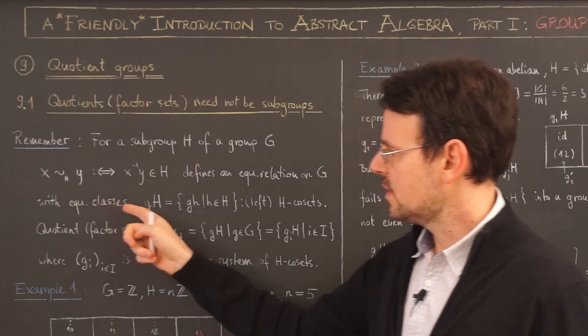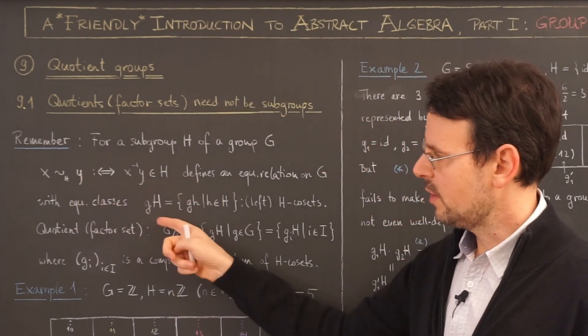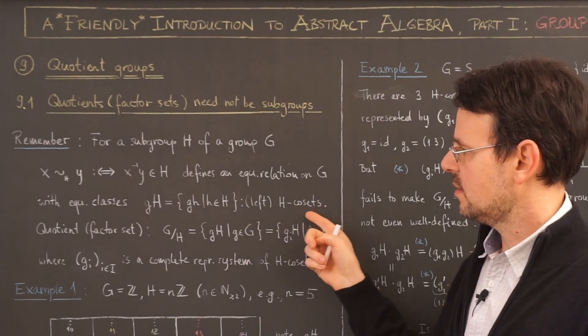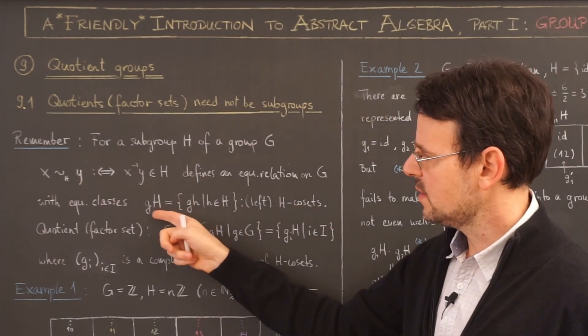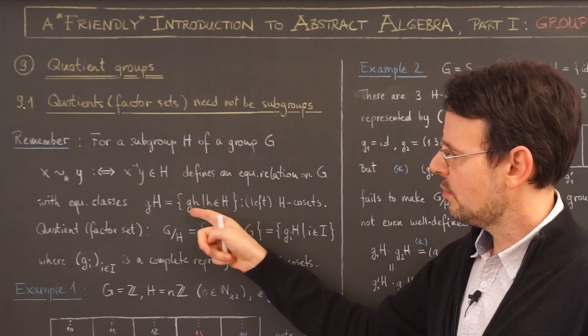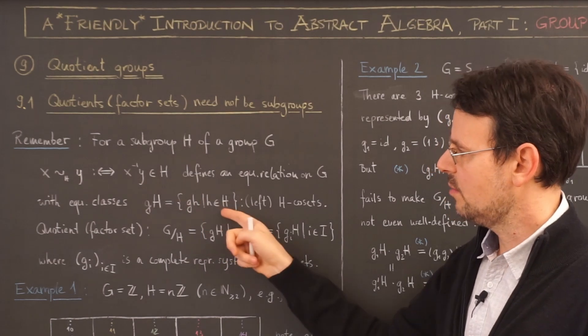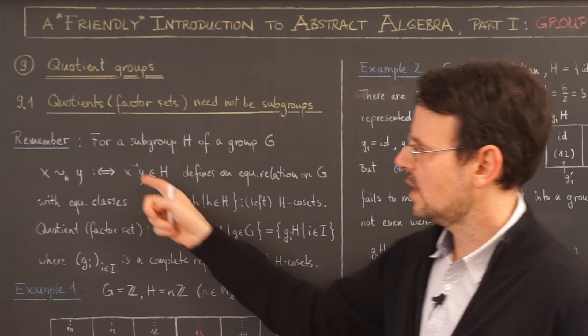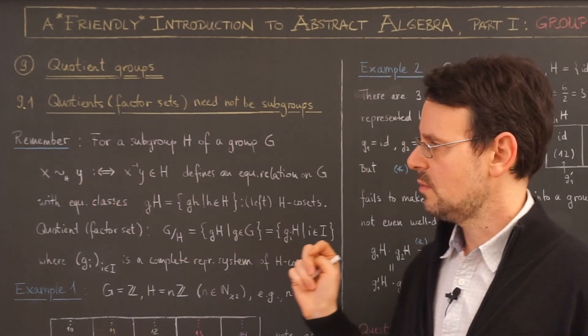We already showed that this defines indeed an equivalence relation on the group G, and that the equivalence classes are of the following form. They are exactly the left H cosets, meaning they look like this gH, meaning we take all the products of this g here with all the elements of H.